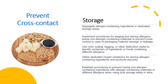Proper storage of allergens and allergen-containing materials is essential to minimize the risk of cross-contact. Recommended procedures include: segregating allergen-containing ingredients in dedicated storage areas or separate shelving; staging and storing allergens below non-allergen-containing materials to prevent cross-contact in case of packaging damage or leakage; using color coding, tagging, or other distinctive marks to identify containers; utilizing dedicated closed containers for storing allergen-containing ingredients; and establishing procedures to prevent mixing in bulk storage tanks or silos.